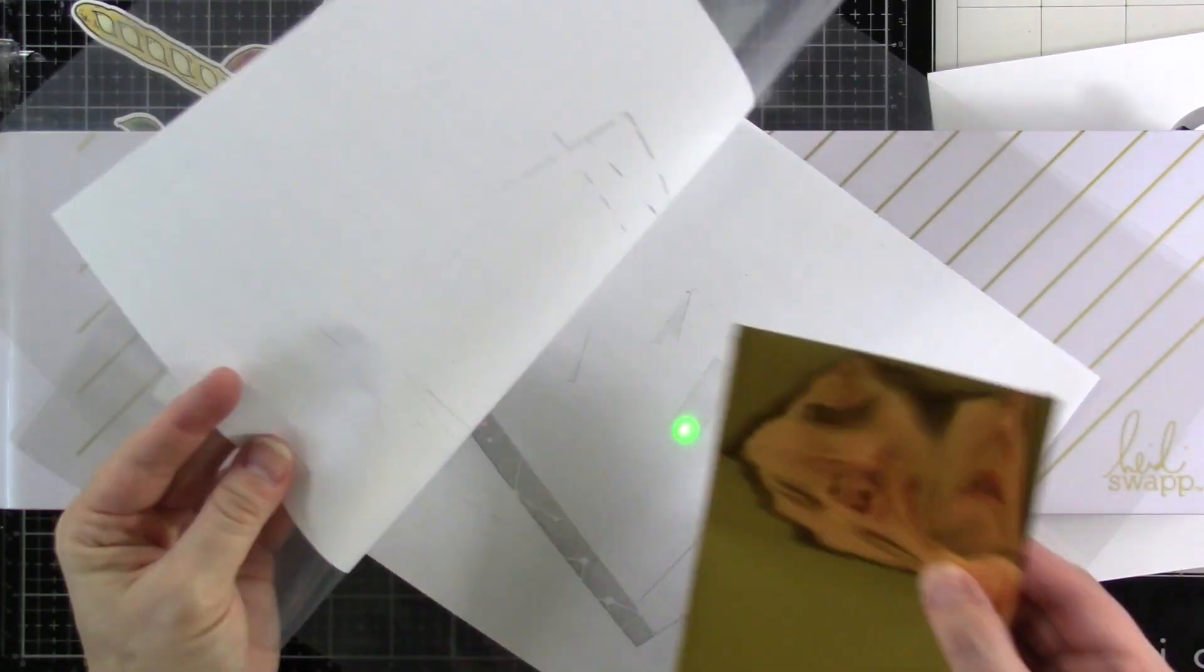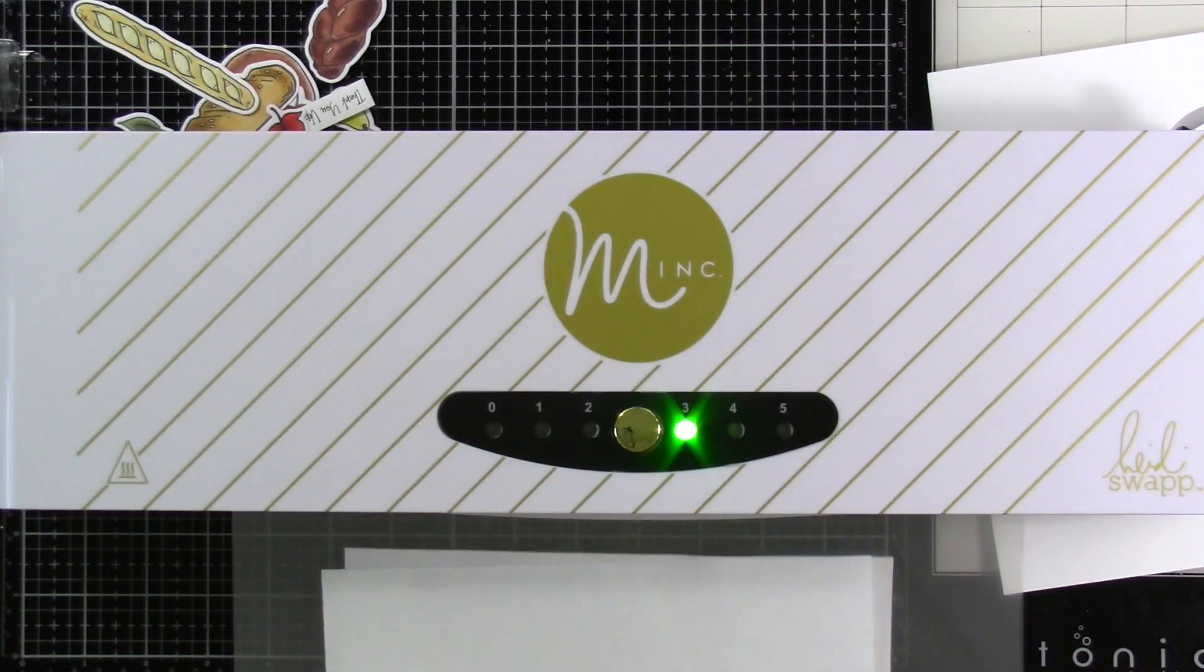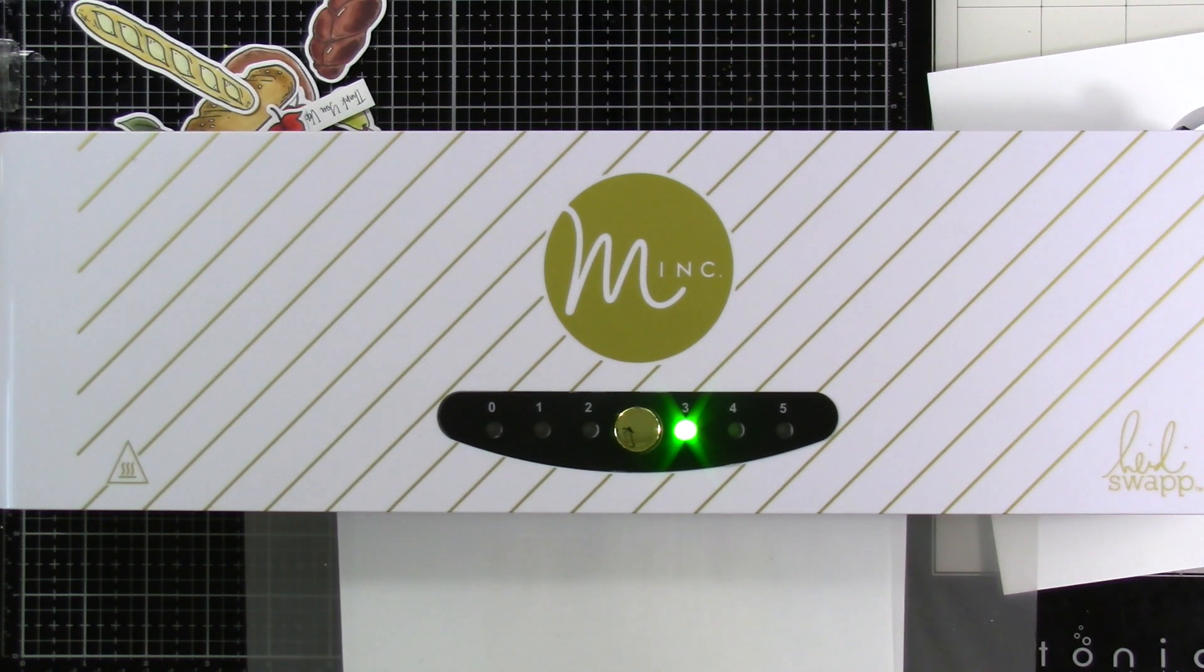I've done that in the past and I like to put the foil down and put that between two pieces of copy paper as I run this through my Minc machine.